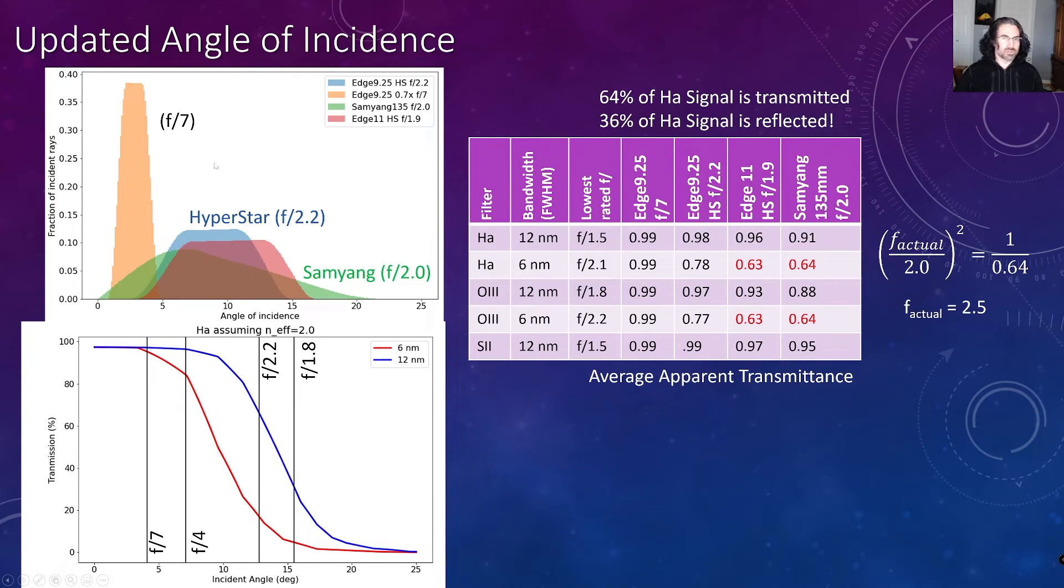So here the color represents the telescope configuration that is used. This orange distribution shows my edge 9.25 with the 0.7 reducer, showing that most of the angles come in from about 1 to 5 degrees. When we go to that hyperstar at f/2.2, we can see that the angles come in from about 2.5 degrees up to about 15 degrees.